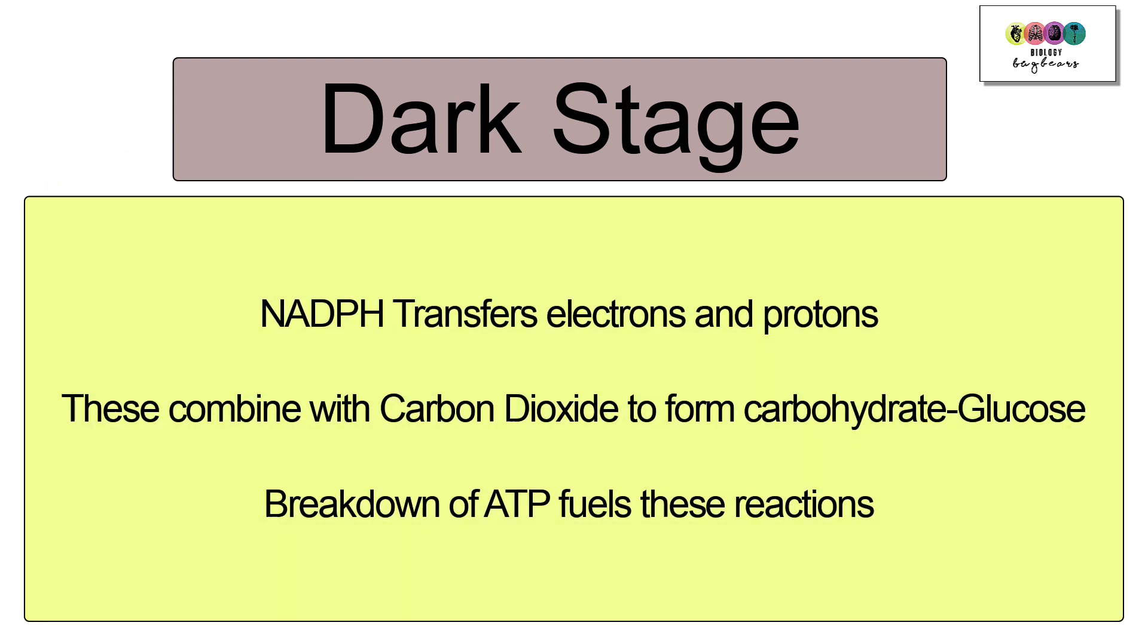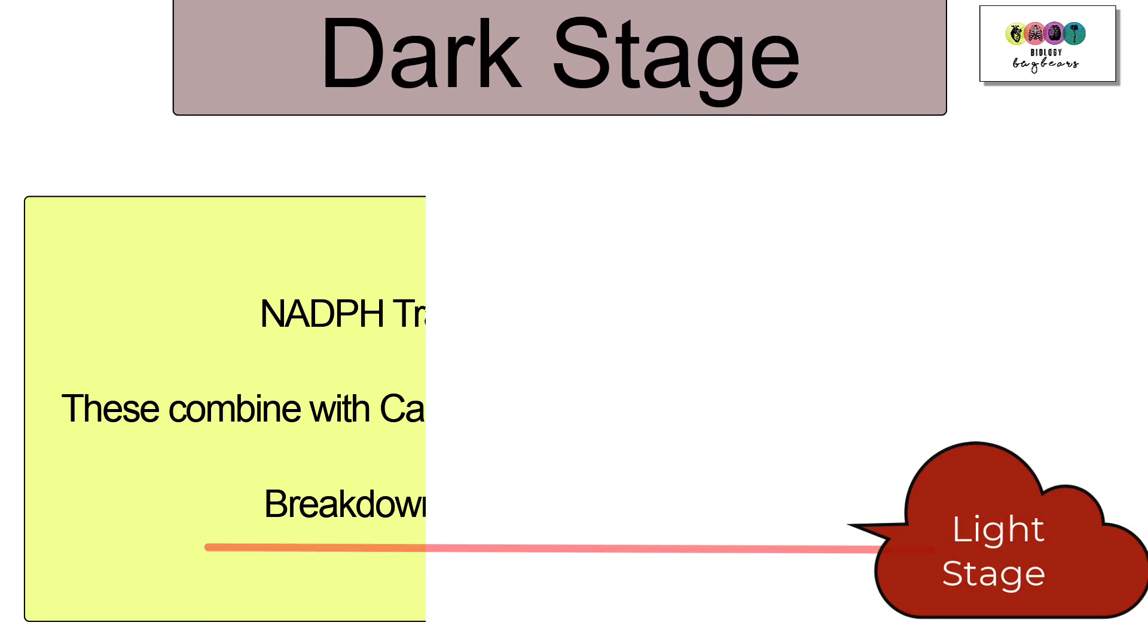In the dark stage NADPH transfers those electrons and protons and bear in mind that it's not just one NADPH, it's going to be many of these molecules. The electrons and the protons transferred are going to combine with carbon dioxide to form carbohydrate glucose and these reactions are all fueled by the breakdown of ATP. The ATP was formed in the light stage.